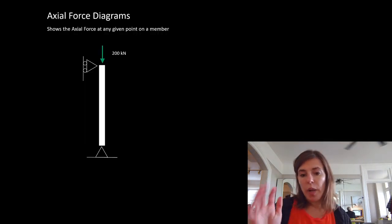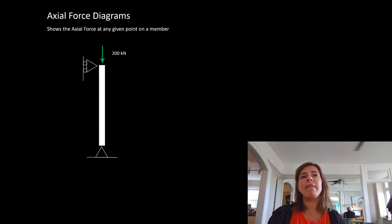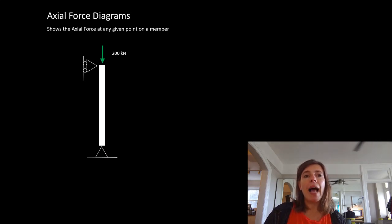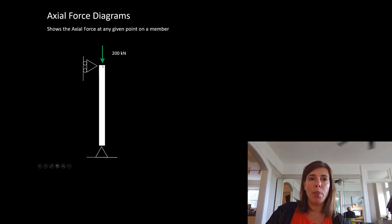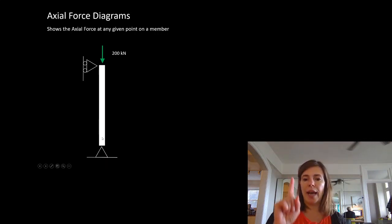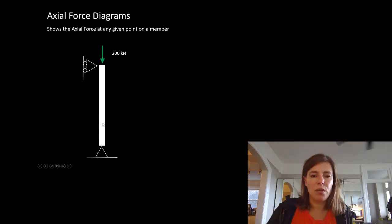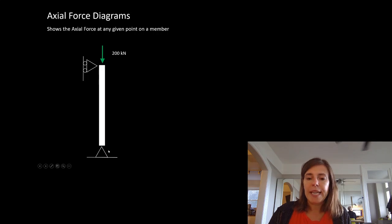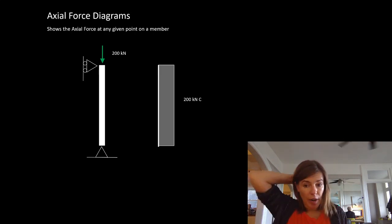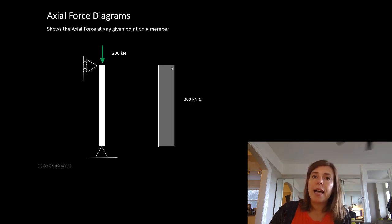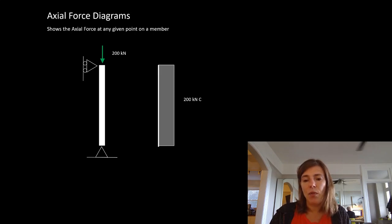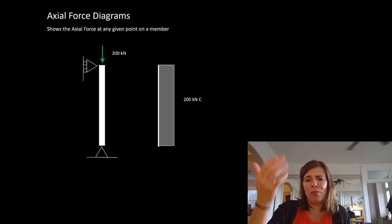This is where I really want you to see about diagrams — how we might visually represent the forces we find in things. The first one is an axial force diagram. If we have this column with 200 kilonewtons applied at the top, we know we must have a 200 kilonewton reaction holding it up at the bottom. That means anywhere along the length of this column, it is seeing 200 kilonewtons of compressive force. We will often draw a visual diagram of that for ourselves — you can see that this column has 200 kilonewtons of axial force along its entire length.